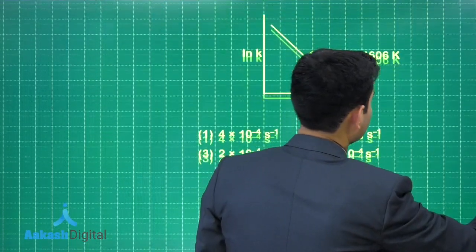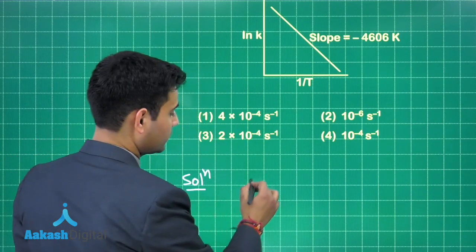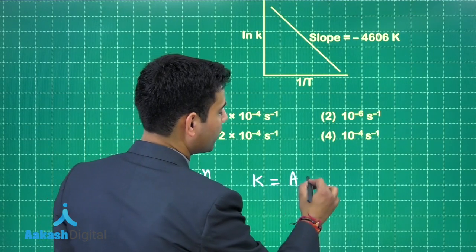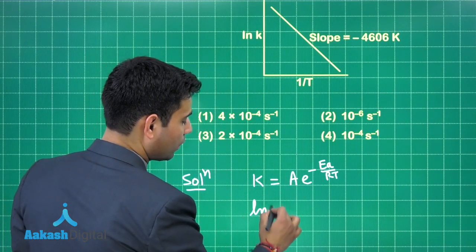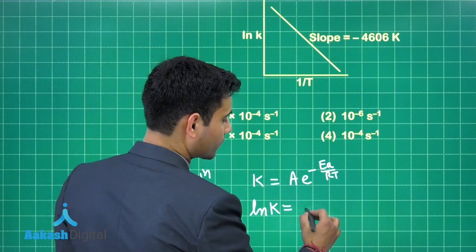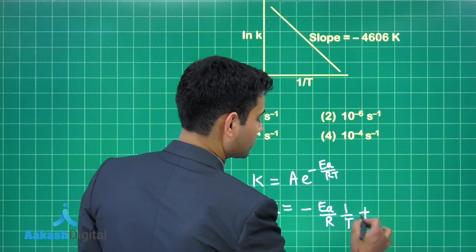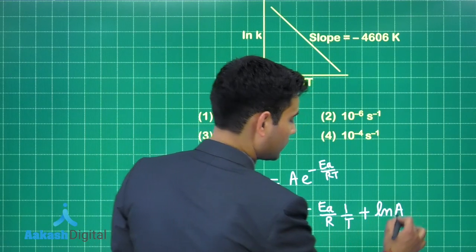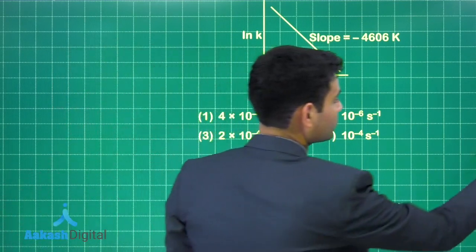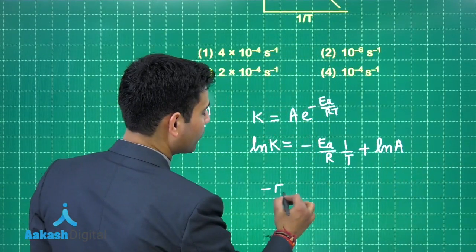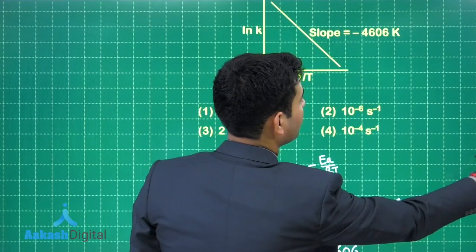Now let's find the slope. If I talk about K, it is equals to A e to the power minus E upon RT. So, taking log both sides, natural log K will be equal to minus E upon RT plus natural log A. So, from here we can simply say that the slope will be equal to minus E upon R.